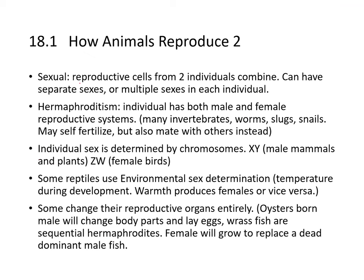Animals also reproduce sexually, where reproductive cells from two individuals combine and fuse. There can be separate sexes or hermaphroditism, where an individual has both male and female reproductive systems. Many invertebrates like worms, slugs, and snails may self-fertilize but can also mate with others. Individual sexes are determined by chromosomes — XY in male mammals.